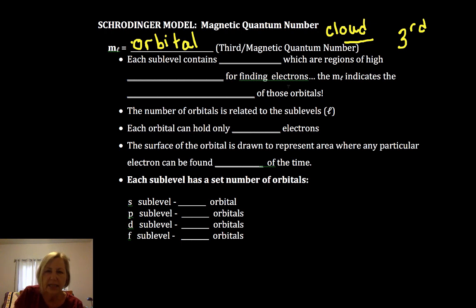Now each sublevel contains one or more clouds or orbitals that are regions of high probability of finding electrons.